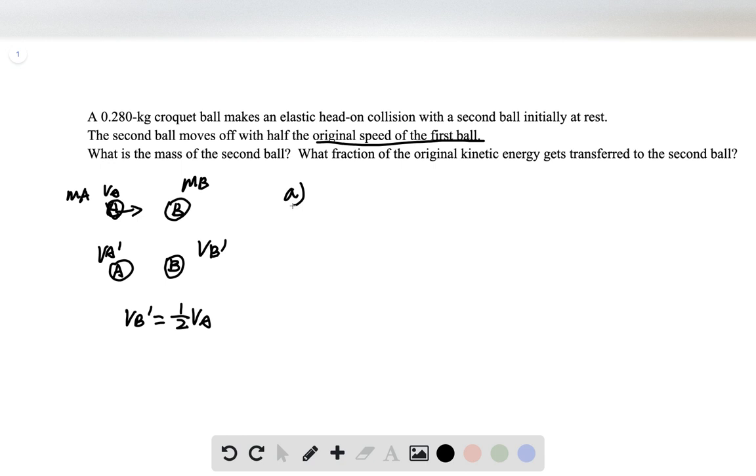So that tells us vA minus vB equals negative of vA prime minus vB prime. But vB is zero, so this is just vA on the left hand side. On the right hand side we can substitute that vB prime equals one half of vA. So this becomes negative vA prime minus one half of vA. We can rearrange this equation so that we finally get vA prime equals negative one half of vA.